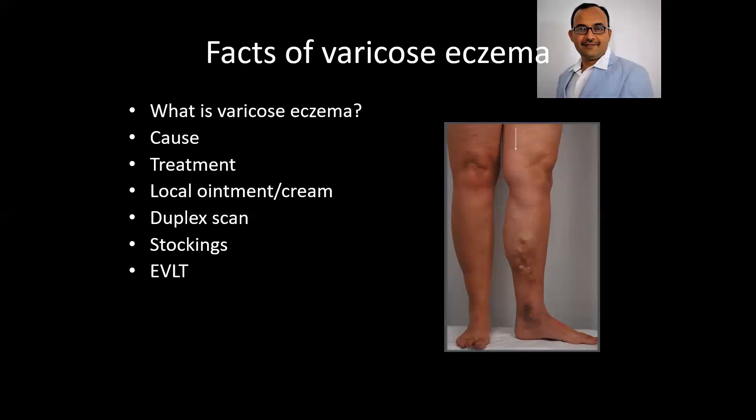On duplex scanning, if the main valves are leaking — like at the saphenofemoral junction or the saphenopopliteal junction — then endovenous thermal ablation should be planned. And if there are perforator leaks, then foam sclerotherapy should be planned. So varicose eczema is definitely curable; if you treat the underlying cause, varicose eczema will disappear.